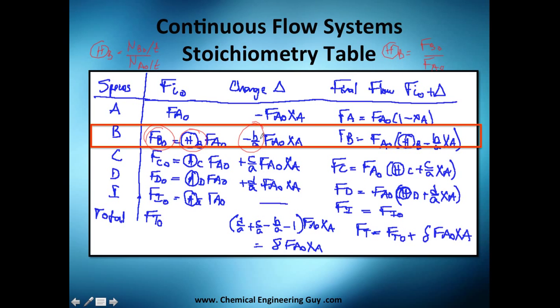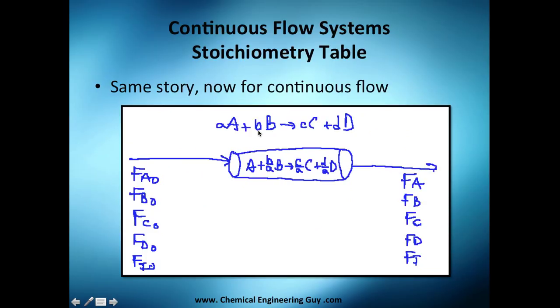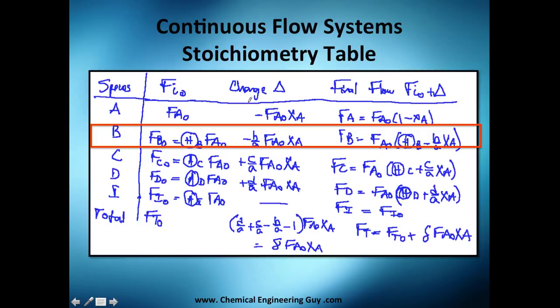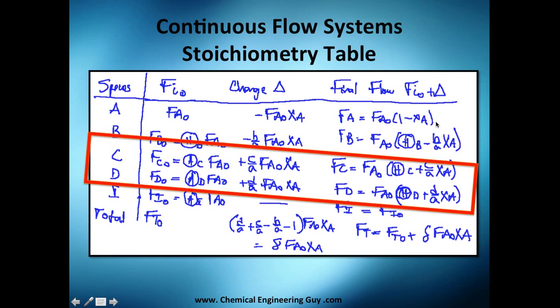Then we have a new stoichiometric value, which is here, and it's negative because it's being reacted. Don't forget that: negative if you are a reactant, positive if you are producing. How do we get this third column? Essentially just add this plus this, you get this.